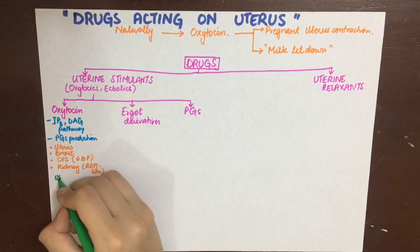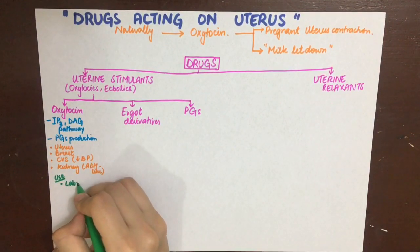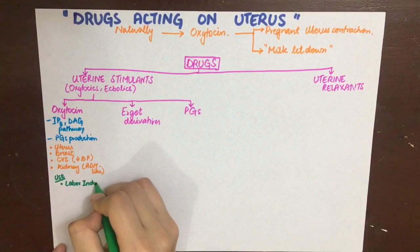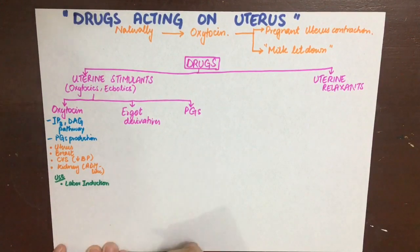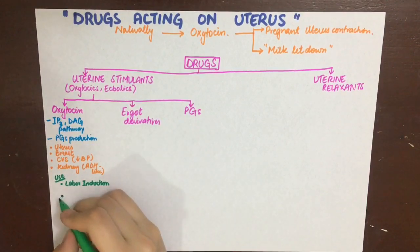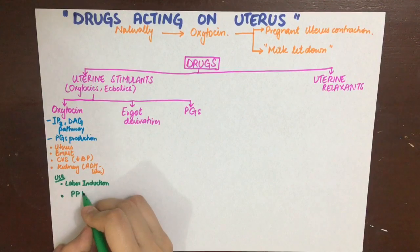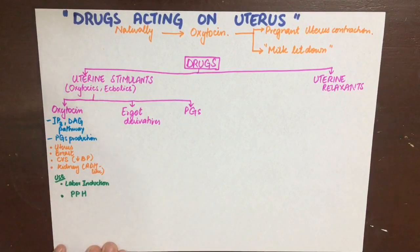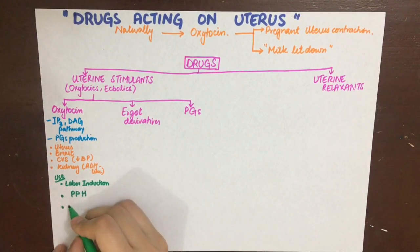Oxytocin can be used in the induction of labor and also in postpartum hemorrhage, because it contracts the myometrium of the uterus, causing the blood vessels supplying the uterus to be contracted and reducing blood loss. It can also augment uterine contraction in difficult labor and help in milk let-down.